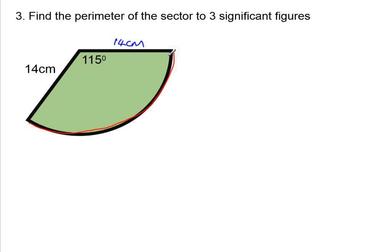Okay, so we call this an arc. So we're looking for this arc length here. Well, if this was a whole circle, I can work out the circumference of a whole circle by doing pi times the diameter.